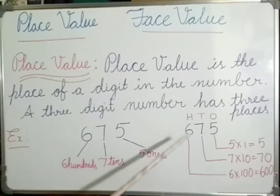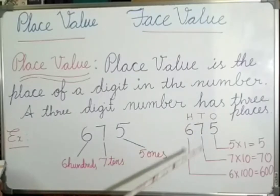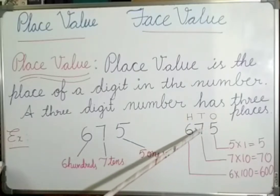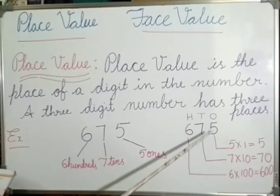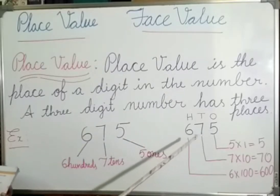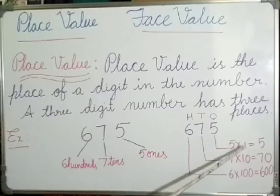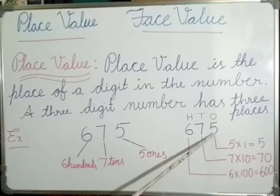Here the places are ones, tens, and hundreds. 5 is at the ones place, 7 is at the tens place, 6 is at the hundreds place. The place value of 5 is 5 × 1, that is 5. So the place value of 5 is 5.